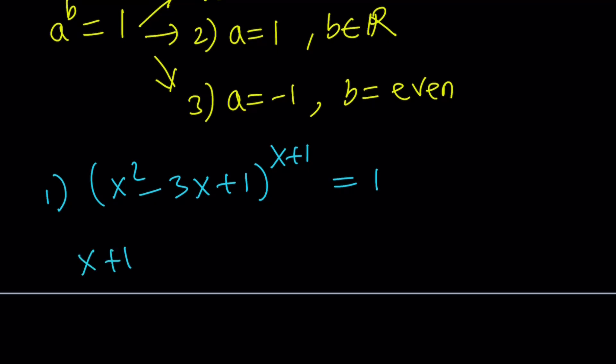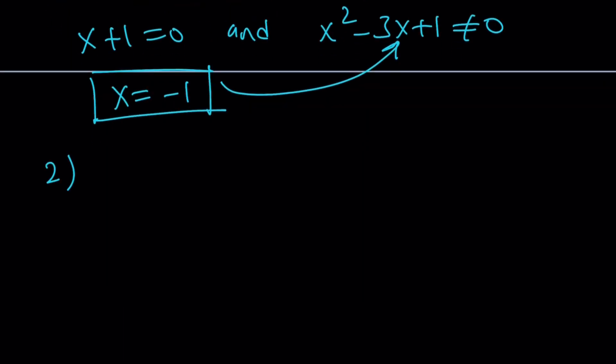I want x plus 1 equals 0 and x squared minus 3x plus 1 does not equal 0. If x plus 1 equals 0, then x equals negative 1. If x is negative 1, this is not going to be 0, obviously, if you plug it in. So we're good, x equals negative 1 works.